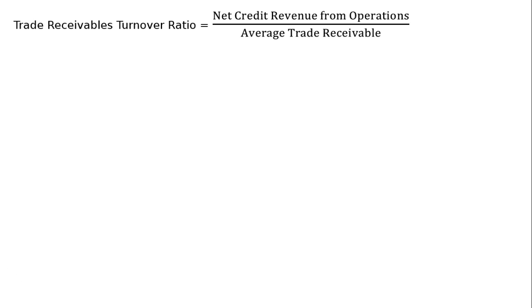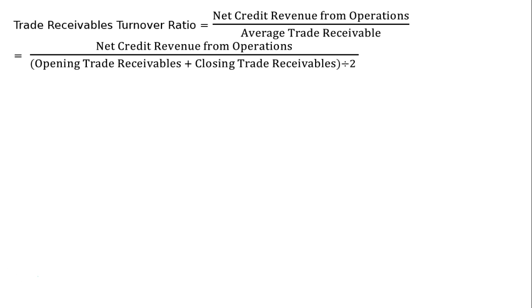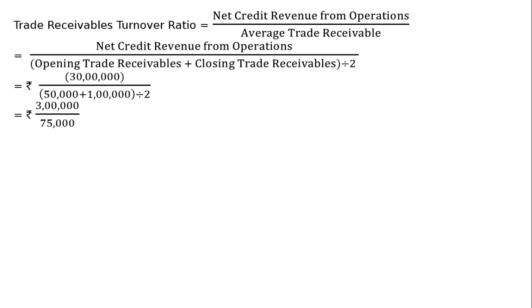Trade receivables turnover ratio is equal to net credit revenue from operations upon average trade receivables, that is net credit revenue from operations divided by opening trade receivables plus closing trade receivables whole divided by 2. That is Rs. 3 lakh divided by Rs. 50,000 plus Rs. 1 lakh divided by 2, giving Rs. 3 lakh divided by Rs. 75,000, which equals 4 times.